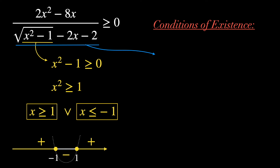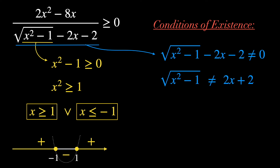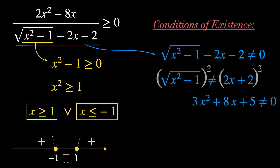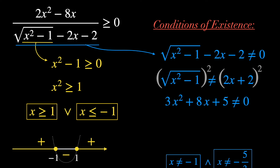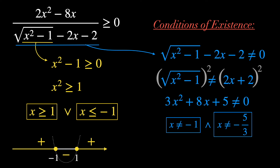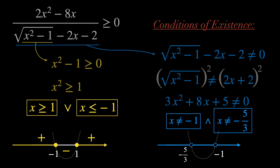For the second condition, the denominator — the square root of x squared minus 1 — must be different from 2x plus 2. Squaring both sides and rearranging terms, we get a second-degree polynomial that must be different from 0. Finding its roots, we get that x is defined everywhere except at the points −1 and −5/3. That's our second condition for x.